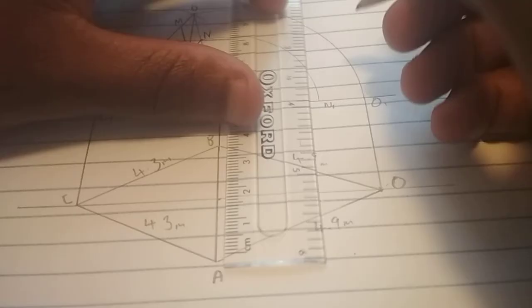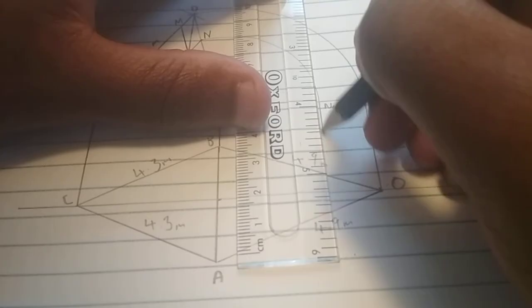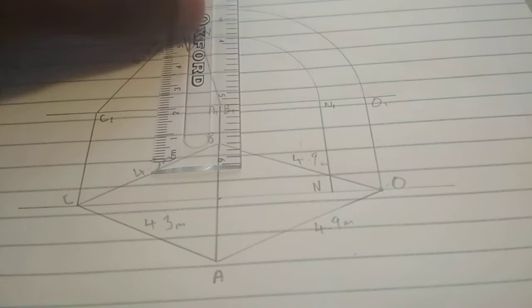From there, draw a vertical line from N1 to the bisection line. Now, that's our point N. Difference in views.